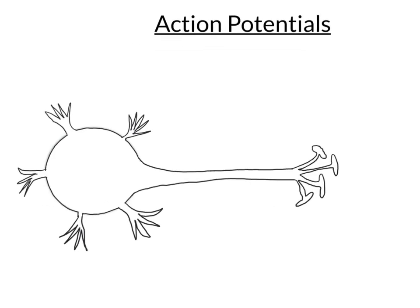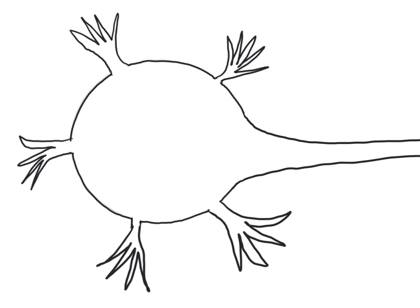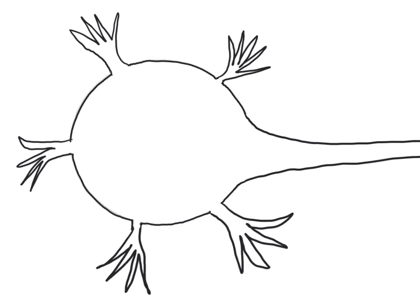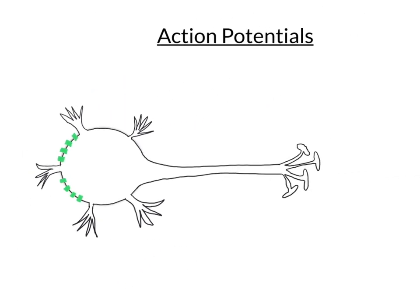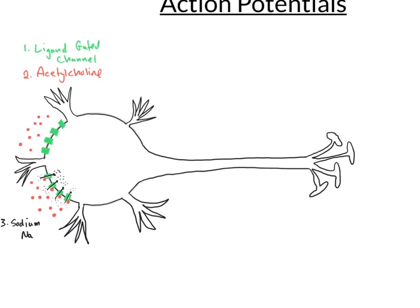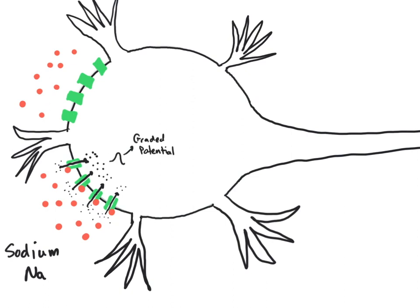Now that we have our neuron drawn, we're going to zoom in on the cell body to draw our ligand-gated channels so we can explain the process of graded potentials. Our next step is going to be to introduce a ligand — acetylcholine. Acetylcholine is going to bind to these ligand-gated channels and open them up, allowing sodium to move into the cell, causing a localized small level of depolarization.